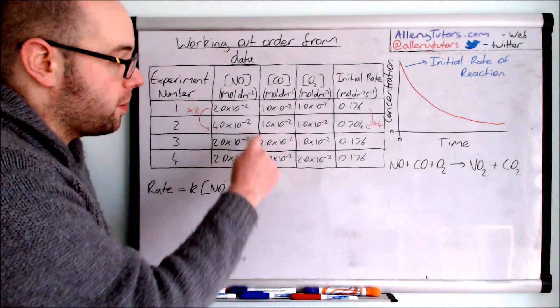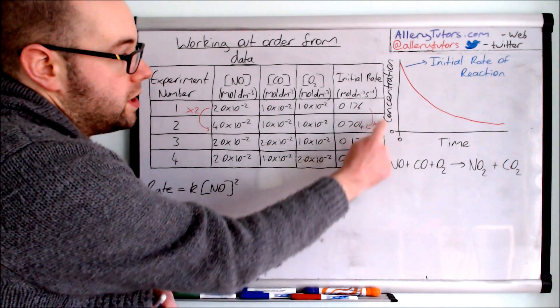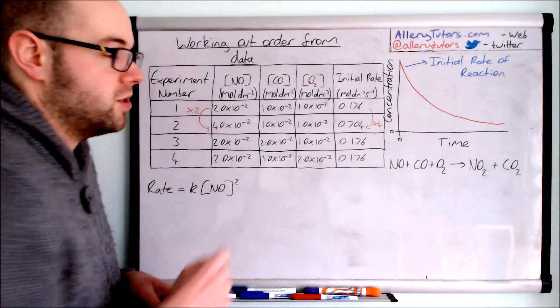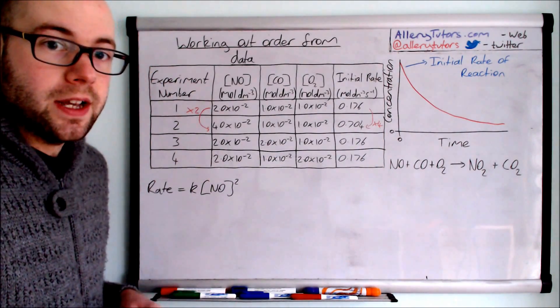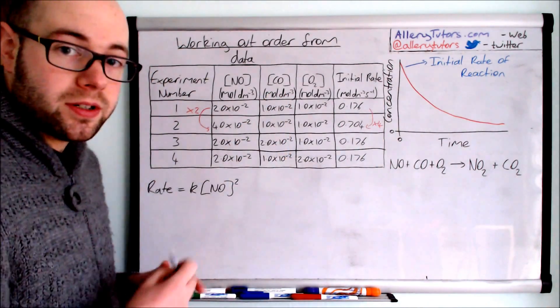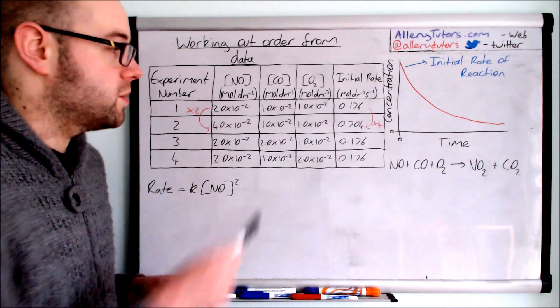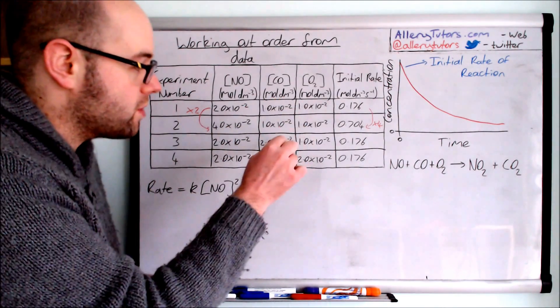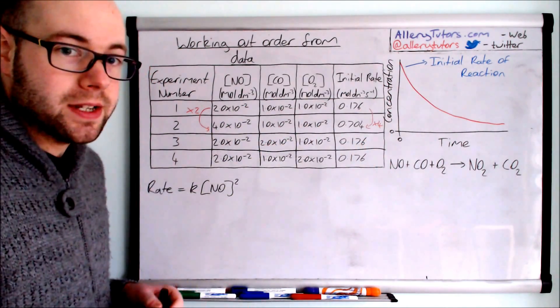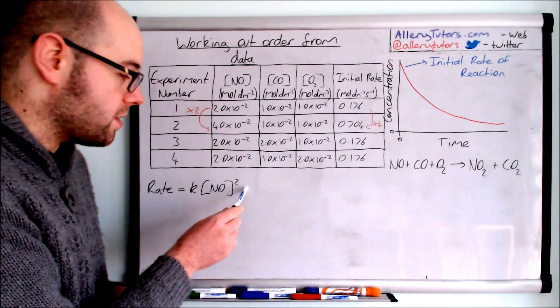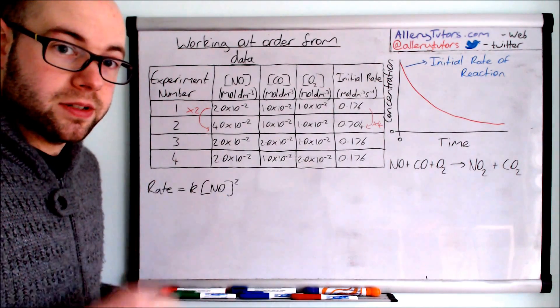You can see here this one's doubled but if you look at the initial rates between these reactions there is no change in rates. That means that with respect to carbon monoxide it is zero order. We don't have any change. So even if we increase this there's no effect on rates. Because it's zero order we don't include it on our rate expression because there's no effect on rates.